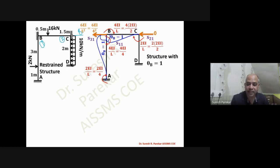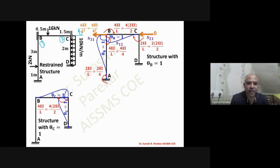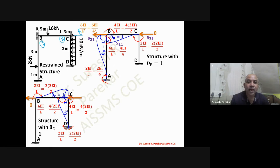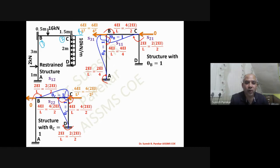Applying θC = 1: moments for CB and CD are computed similarly. Reaction at B is zero, but reaction at C is non-zero, so only RC contributes to S32. The displacement numbers are assigned 1, 2, 3 for θB, θC, and Δ respectively.